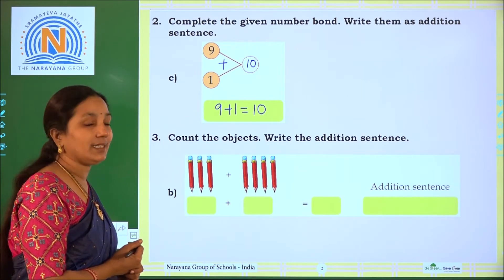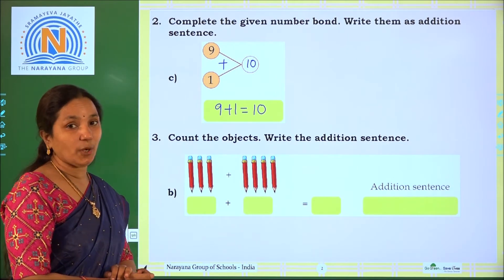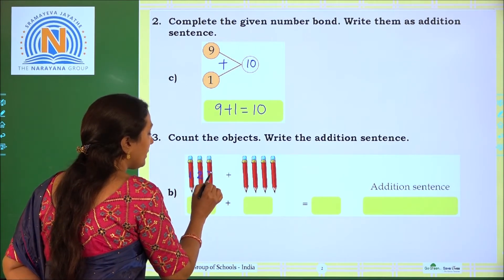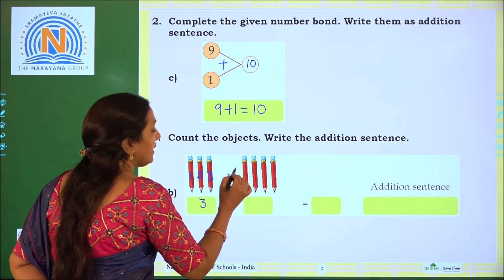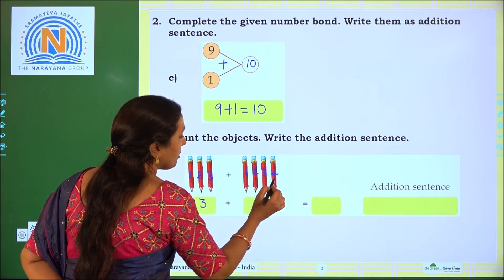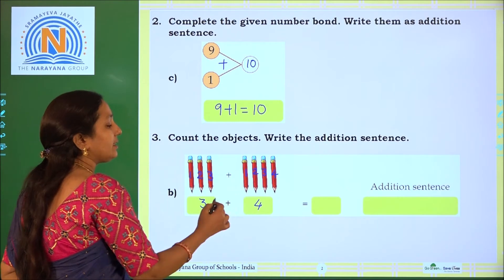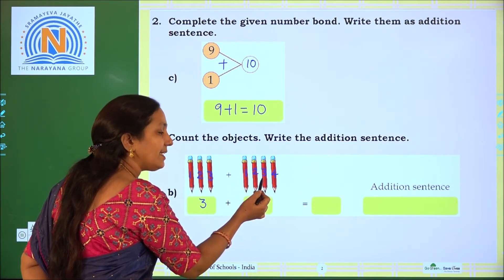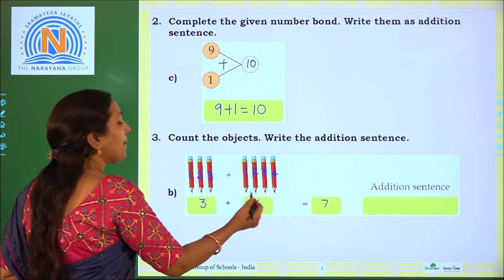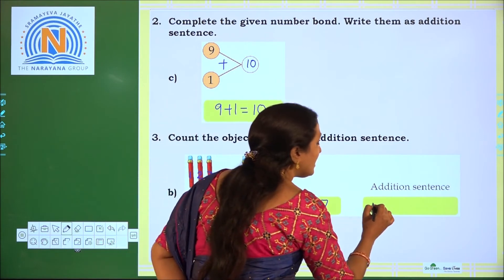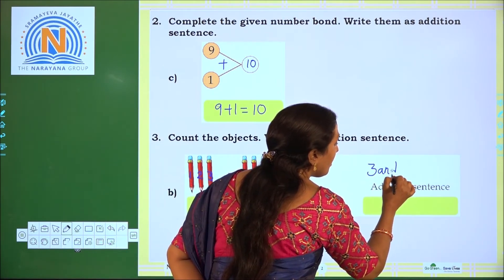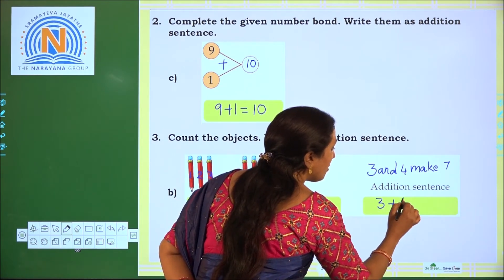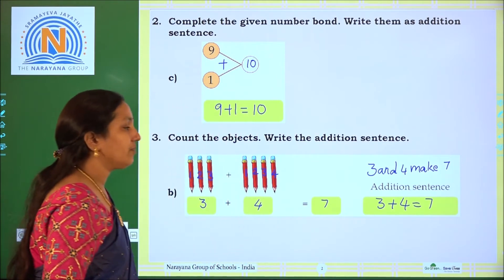Next one: count the objects and write the addition sentence. First we have to count the given objects. How many pencils are given in the first group? 1, 2, 3. So here 3 pencils are there. In the second group: 1, 2, 3, 4. So here there are 4. So 3 plus 4 — counting on: 4, 5, 6, 7. We get 7. 3 plus 4 equal to 7. So the addition sentence is 3 plus 4 equal to 7. We are adding 3 objects and 4 objects, we get 7 objects.